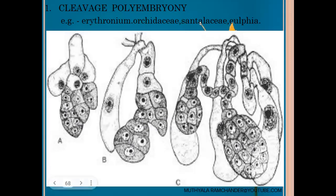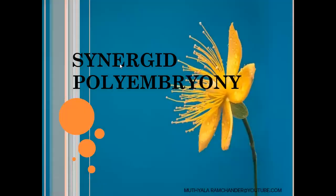In the diagram, initially there is only one true embryo containing a mass of globular structure. During development, the true embryo participates in cleavage and divides into parts. Each part develops into an embryo-like structure. The cleaved lateral parts also develop into embryo-like structures. Sometimes more cleavages occur and the true embryo cleaves into more fragments, each developing into a polyembryony structure capable of forming a plantlet. Example plants are Erythronium, Orchidaceae, Santalaceae, and Ulfea.